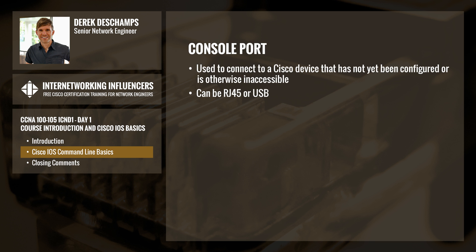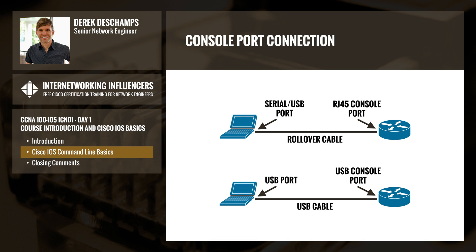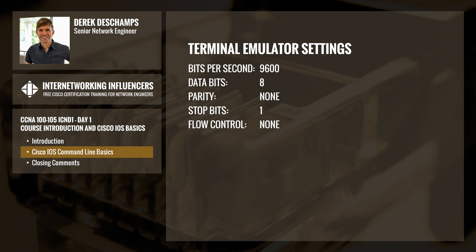A console port is used to connect to a Cisco device that has not yet been configured, or is otherwise inaccessible. A console port can be RJ45 or USB. To connect to an RJ45 console port, a rollover cable is used. To connect to a USB console port, a standard USB cable is used. Once the physical connection between your PC and the Cisco device is in place, a terminal emulator program, such as PuTTY or SecureCRT, is used with the following settings.